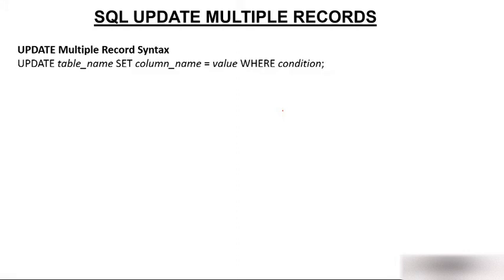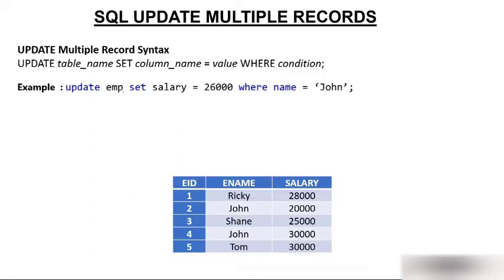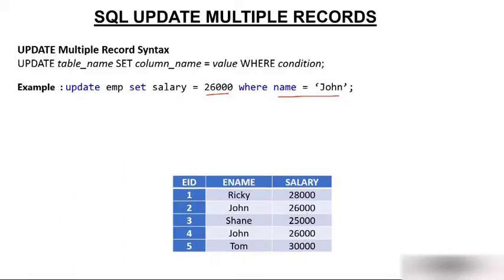Can you update more than one record at a time? Yes, absolutely. The syntax is the same: UPDATE table_name SET column_name = value WHERE condition. For example: UPDATE imp SET salary = 26000 WHERE name = 'John'. Since there are two Johns in the table, this query updates the salary of both Johns to twenty-six thousand. More than one row gets updated.